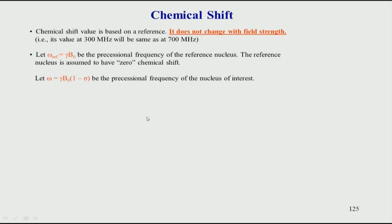Mathematically, the chemical shift value is calculated as follows. When you have an omega, you take some reference compound — the reference can be any particular compound, which we will see later. For the reference, we assume — and remember it is an assumption — that we force it to have a zero chemical shift. That means the sigma value for the reference molecule is set to 0, so that omega of the reference is simply gamma times V0.